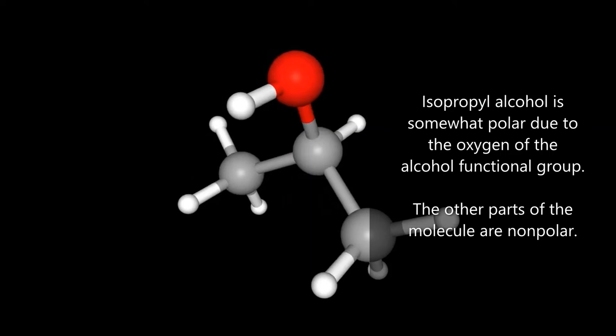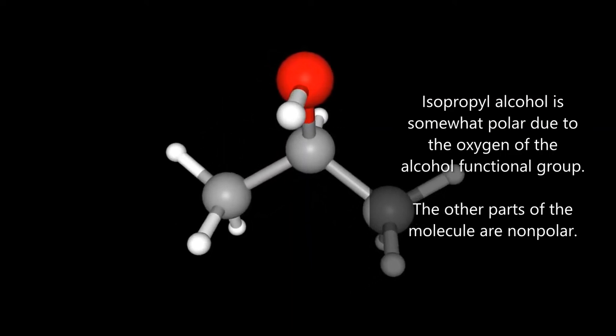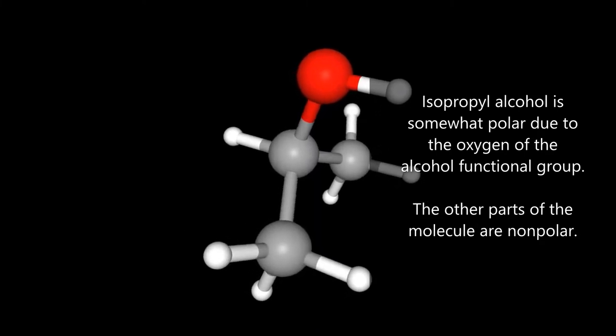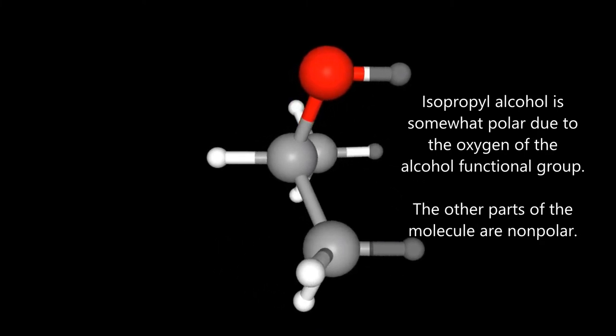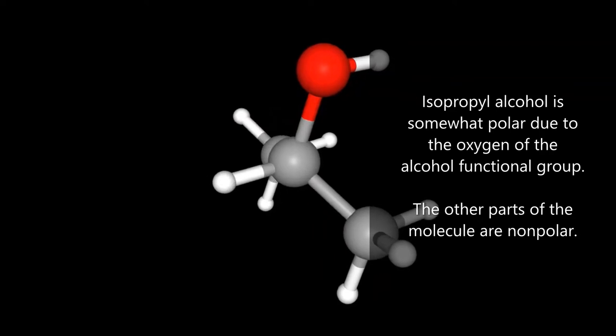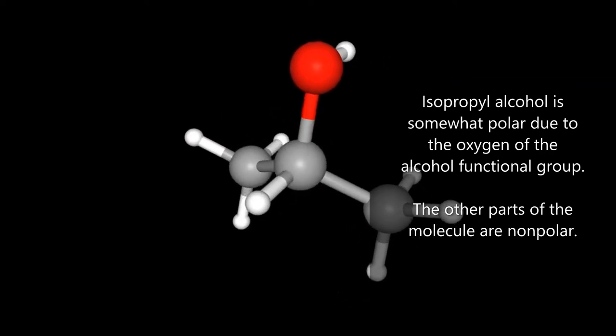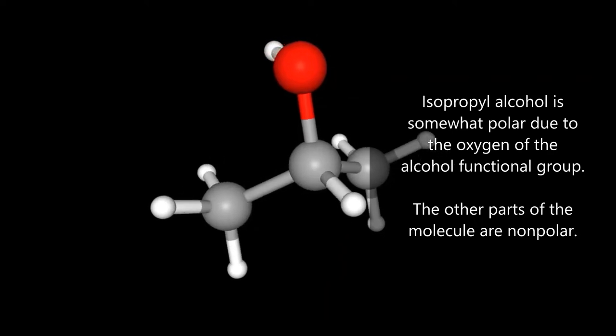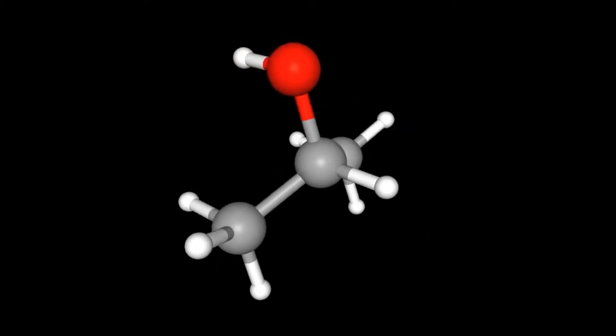Isopropyl alcohol is also a polar molecule because of the red oxygen atom. The rest of the molecule is non-polar. Overall, we would say isopropyl alcohol is somewhat polar. This is because the oxygen of the alcohol functional group gives the molecule a polar region, while the other parts of the molecule are non-polar.